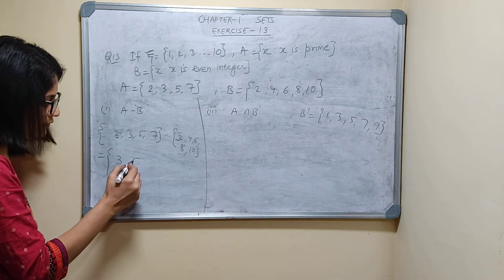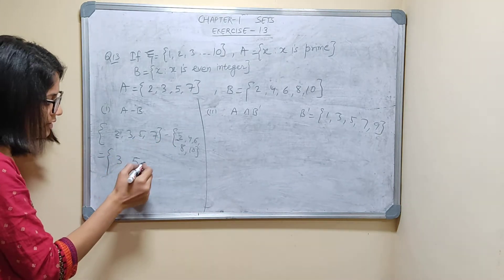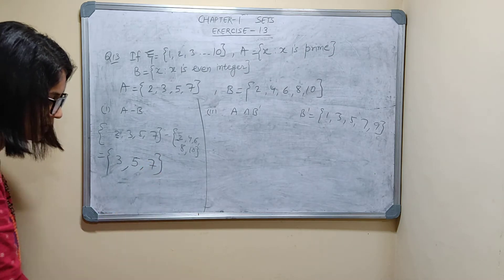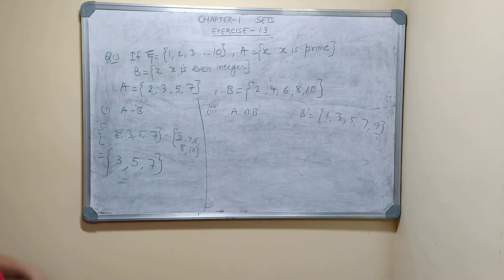5, you can write. 5, you can write, because it's not here. 7. 3, 5, 7. That is A minus B.